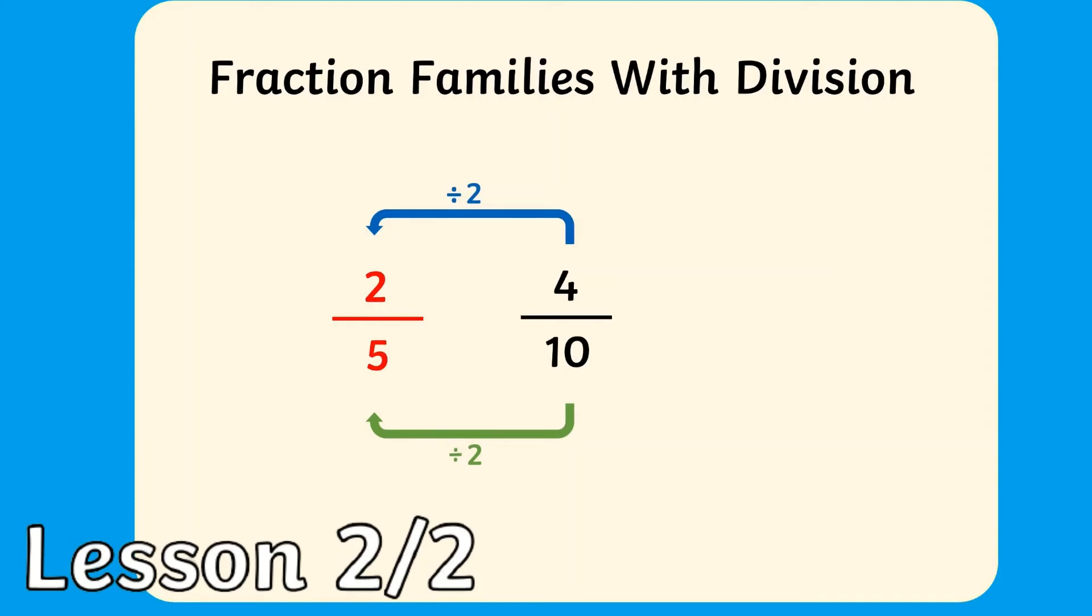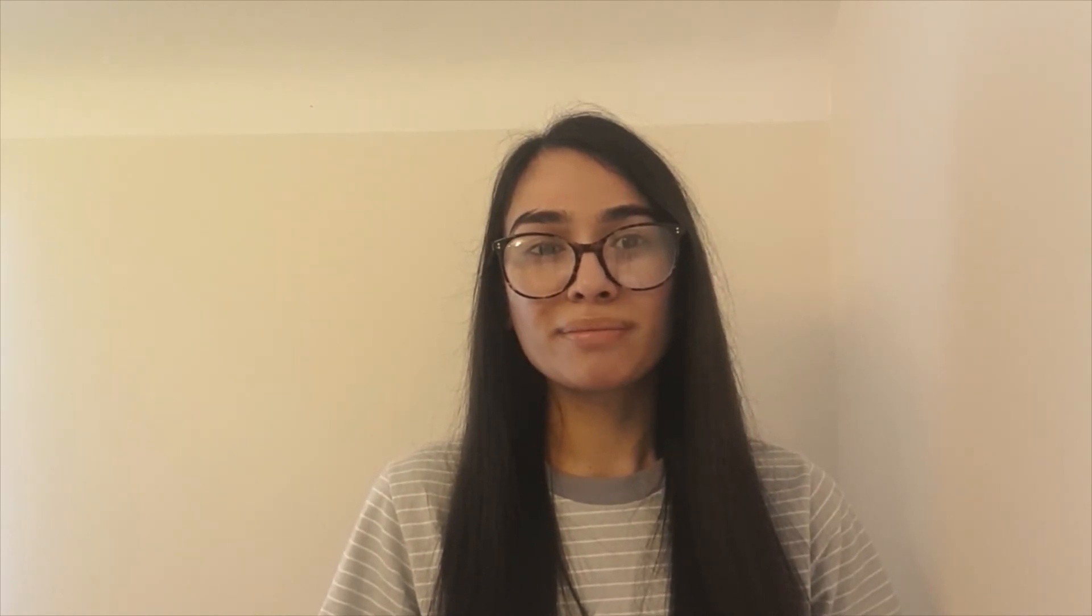Ten divided by two is five, so that becomes our new denominator. This means the fraction two fifths is equivalent to the fraction we started with, four tenths. This series is perfect to use to support your teaching, for activity ideas, and even to be set as homework. To watch our lesson videos, simply search for Twinkle Teachers.